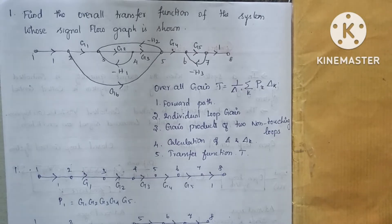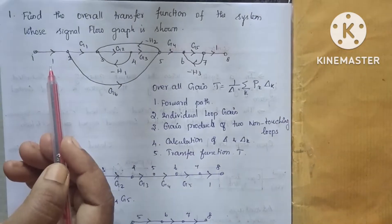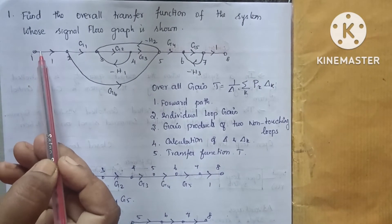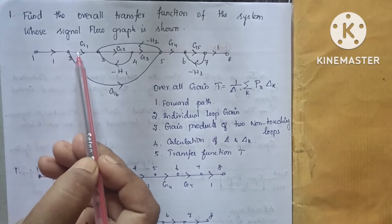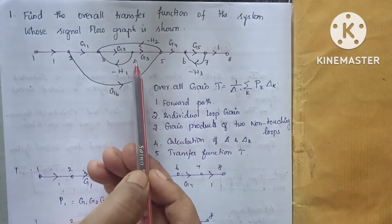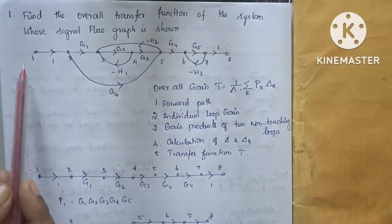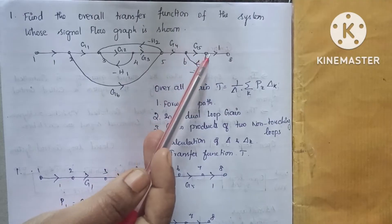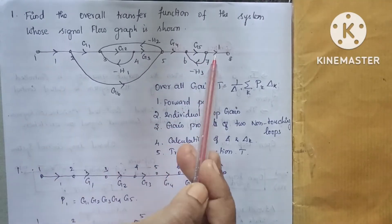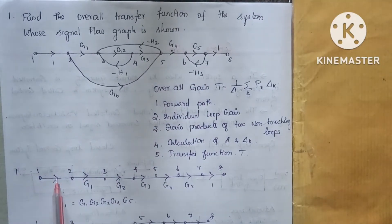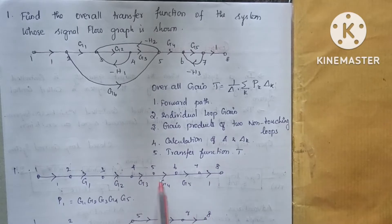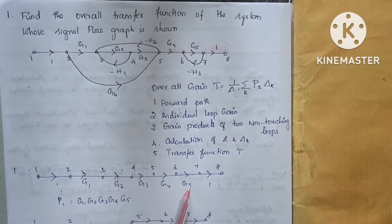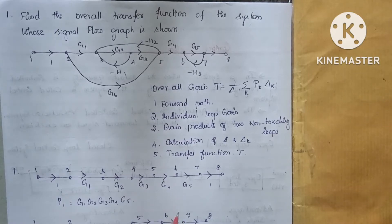We calculate the forward paths. Forward path P1 is calculated using the values G1, G2, G3, G4, and G5.